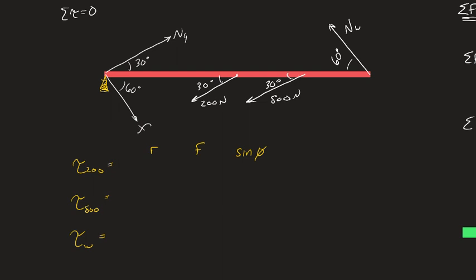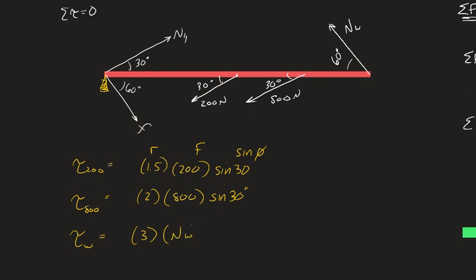The three torques are: torque from the ladder weight at the midpoint — r = 1.5 m, F = 200 N, angle = 30°, so torque = 1.5 × 200 × sin(30°). Torque from the person at two meters — r = 2 m, F = 800 N, angle = 30°. And torque from the normal force at the wall end — r = 3 m, F = N_wall, angle = 60°, so sin(60°) = √3/2 ≈ 0.866.